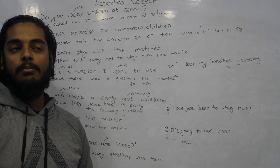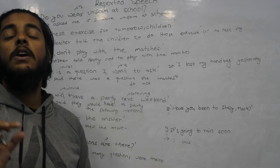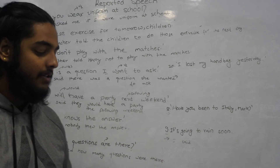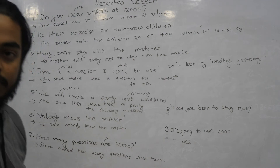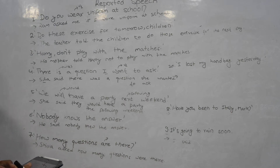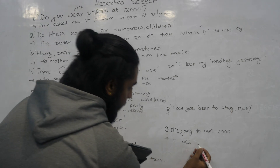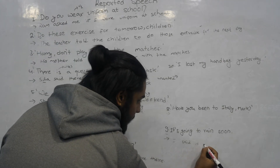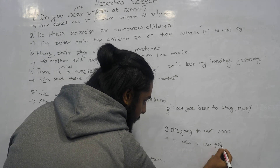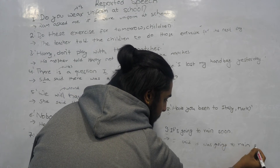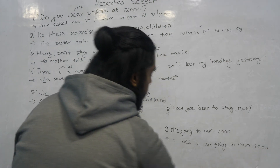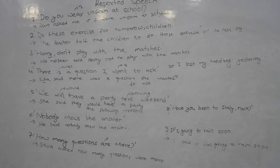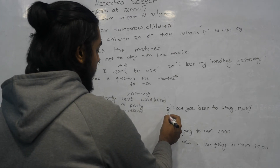'It's going to rain.' Structure: subject + is + verb + ing — present continuous. In reported speech this becomes past continuous: subject + was + verb + ing. So 'it is going to rain' becomes 'it was going to rain.'